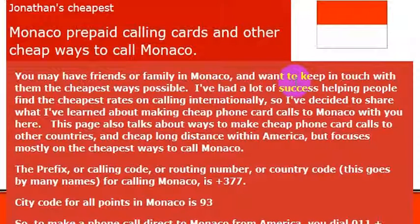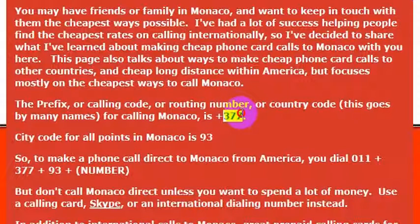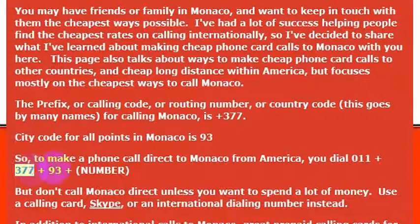Monaco is kind of an expensive place. But if you are going for vacation or otherwise and you're calling from the United States, you will need to know the international country code to make a call to Monaco, which is 377. So if you were wanting to call Monaco directly, you would dial 011, the international dialing code, and then 377, which gets you to the country.